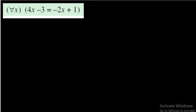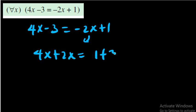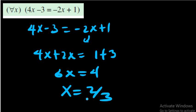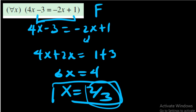One more question: for all x, 4x − 3 = −2x + 1. We solve: 4x + 2x = 1 + 3, so 6x = 4, giving x = 2/3. This equation is only satisfied when x = 2/3. It does not work for all real numbers — you can insert any other real number and the equation will be false. It works only for x = 2/3.